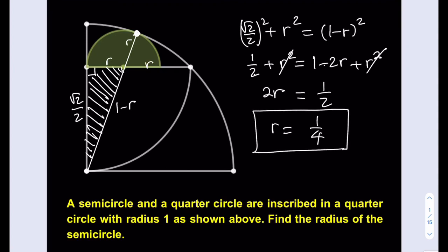That's it. We found the radius of the semicircle to be 1 fourth. Thank you for watching. See you in the next video. Until then, take care. Bye bye.